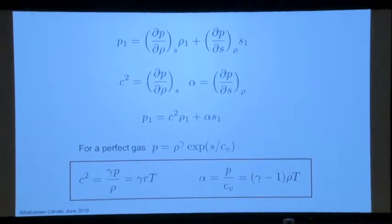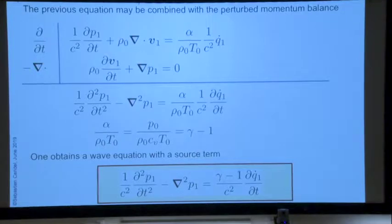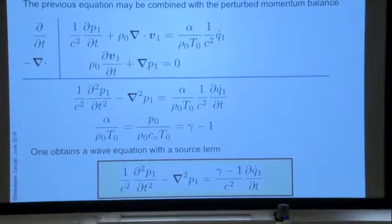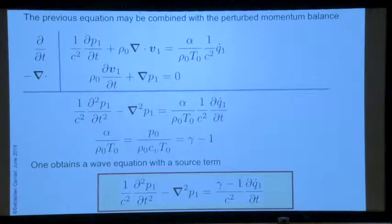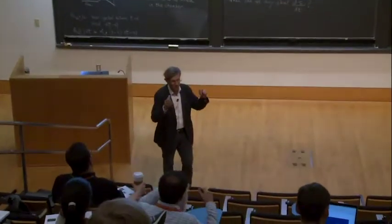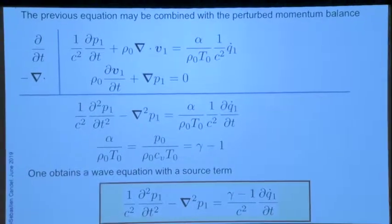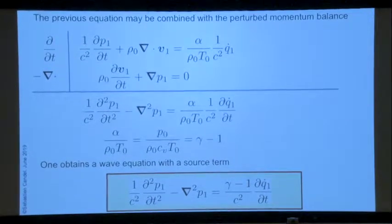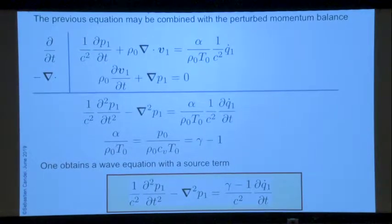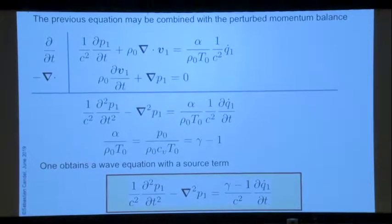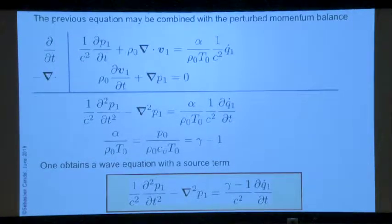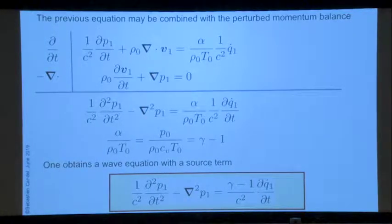We finally get a wave equation, but now this wave equation has a source term. The source term reflects the fluctuations in heat release rate that appear, and the source term is the time derivative of the heat release rate fluctuations. On the left, it's the wave equation; on the right, it's the source of noise — the source of pressure fluctuations in the field.